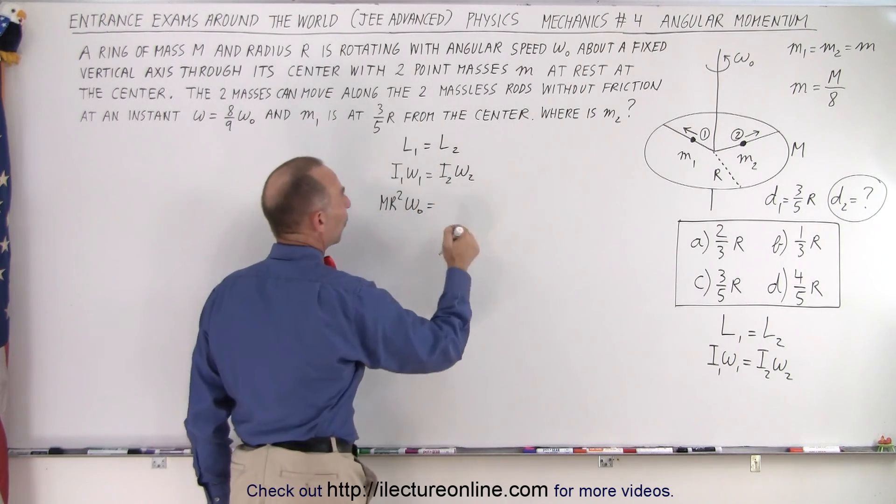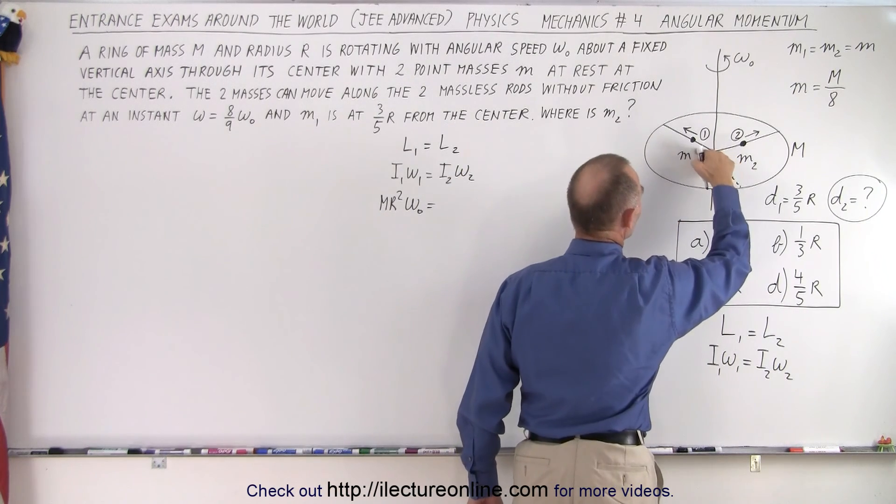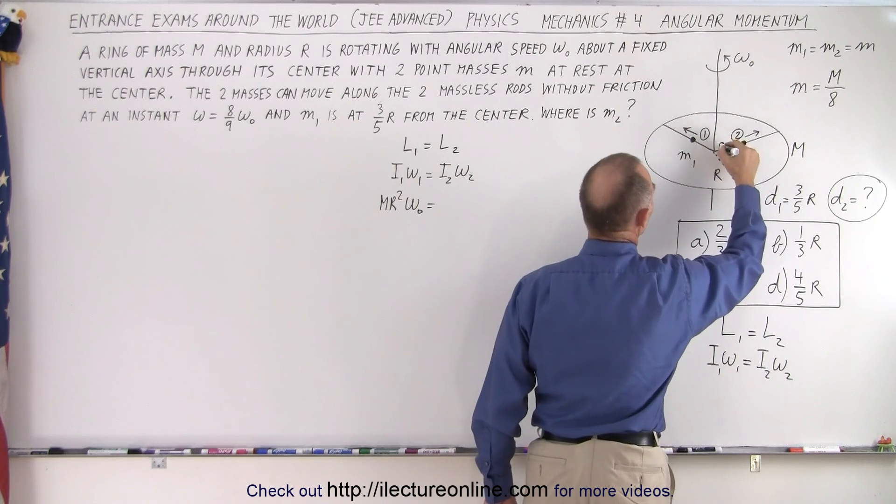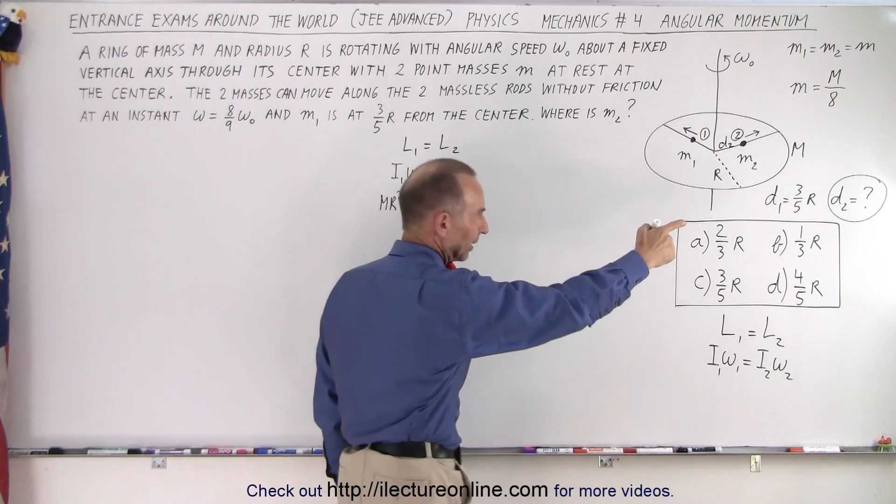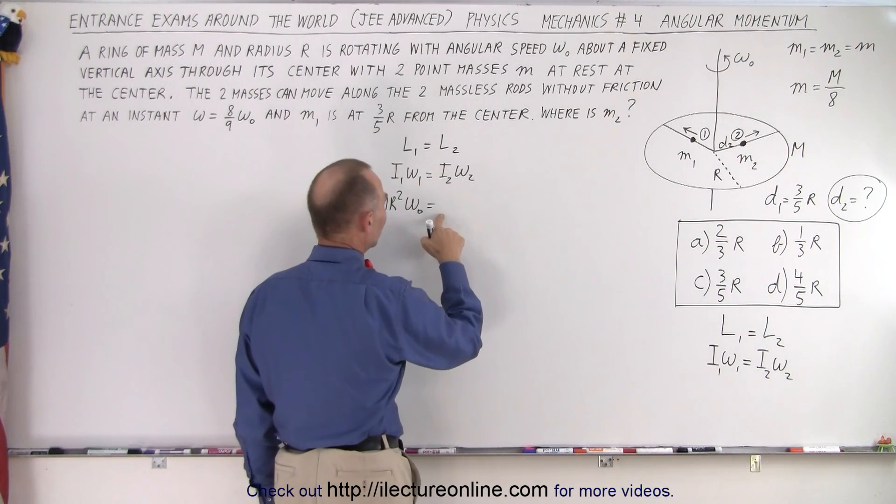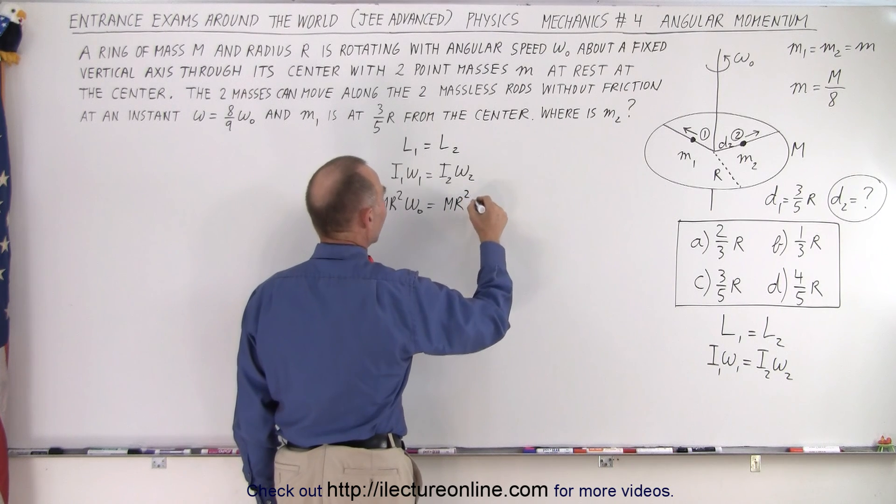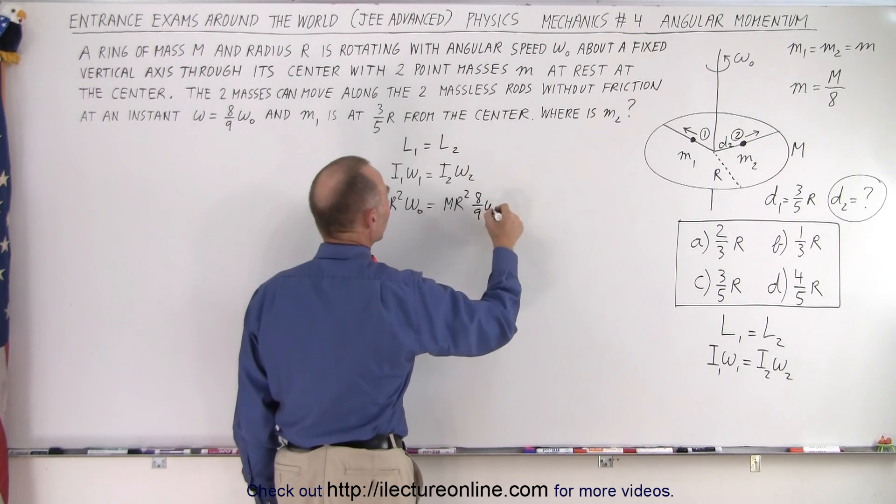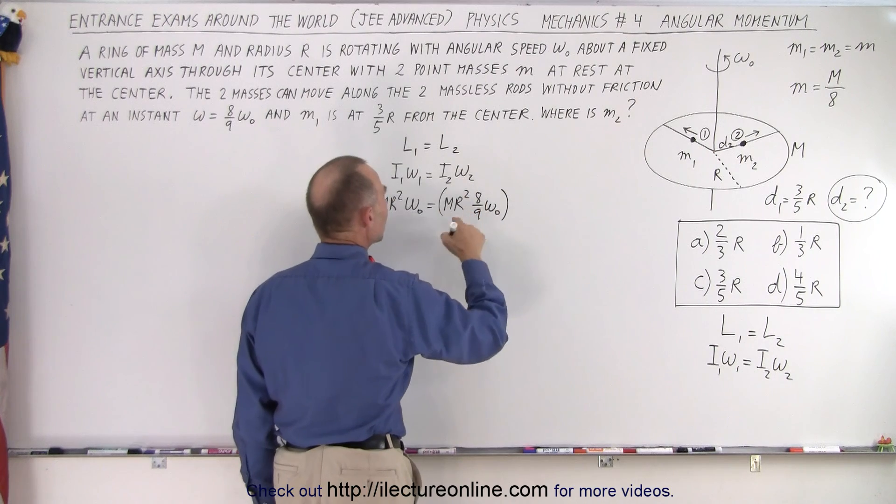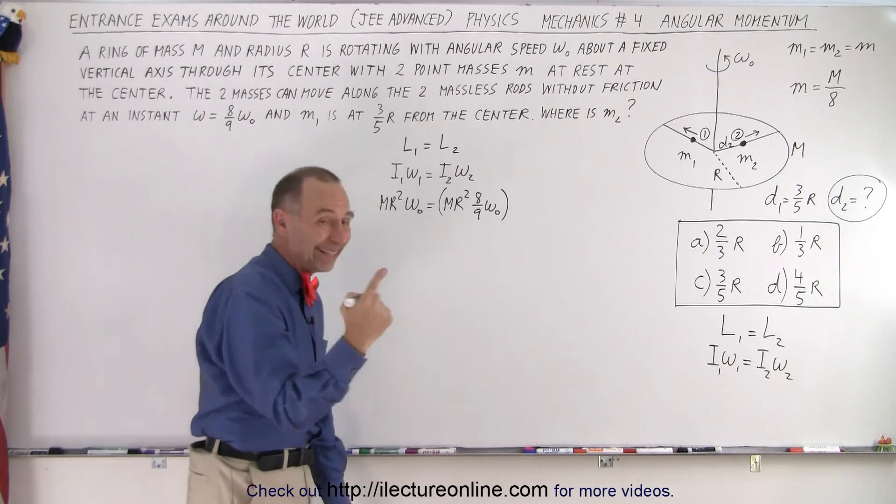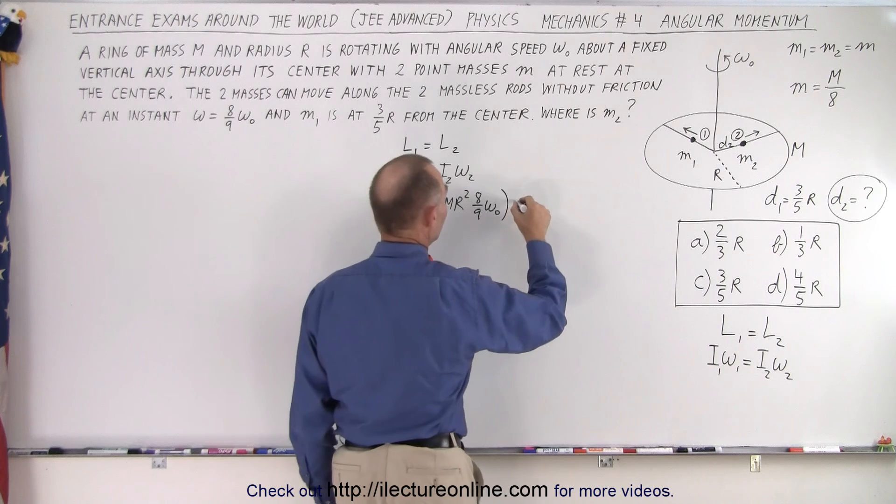Now, once they've moved out to some distance, we know the first distance but we don't know the second distance, d2. This would be mr squared times eight-ninths omega sub-naught. That would be the contributing portion of the ring that's rotating.